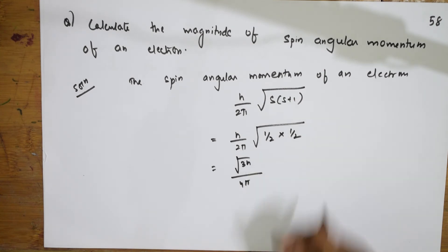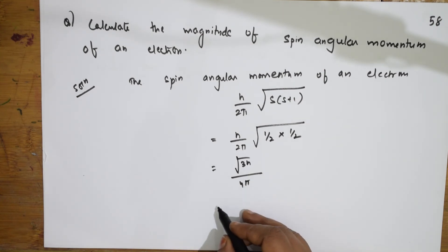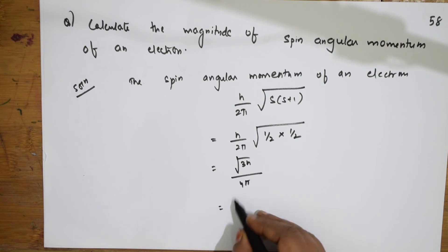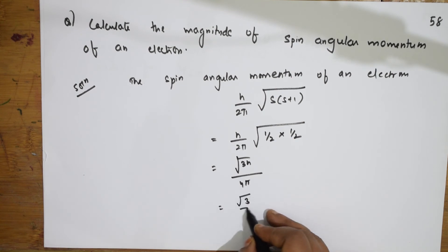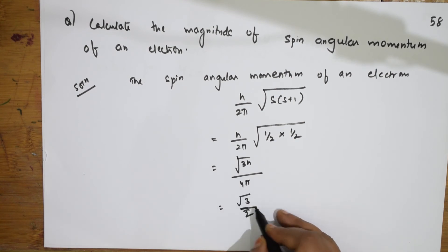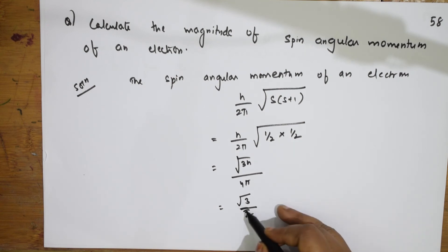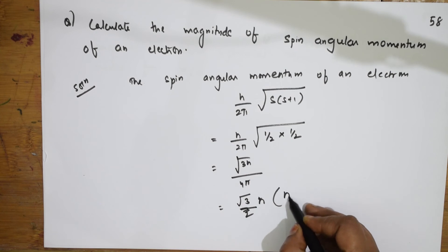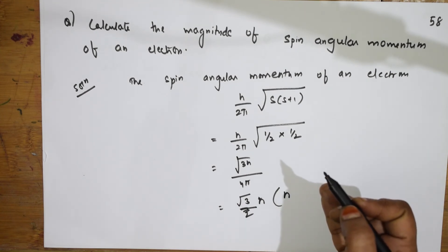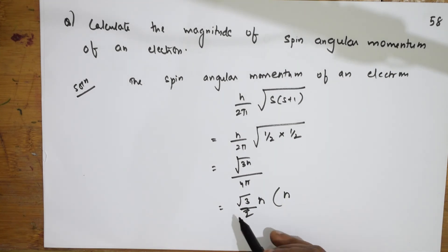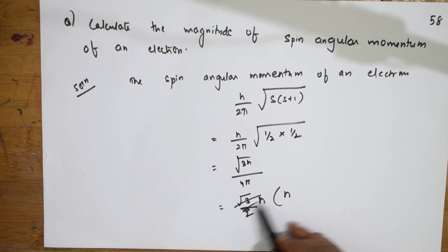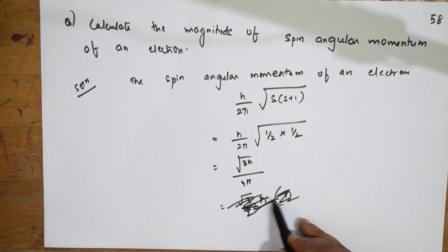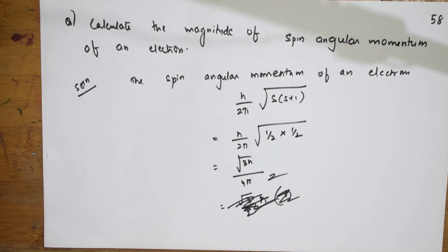The spin angular momentum of an electron comes out to √3/2 · ℏ (h-bar). You can finish the answer here — no need to confuse further.